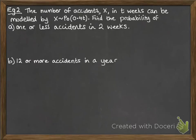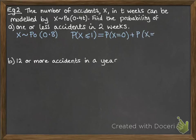Okay, next example. The number of accidents x in t weeks can be modelled by a Poisson distribution with a mean of 0.4t. Find the probability of one or less accidents in two weeks. So x is going to follow a Poisson distribution of 0.8 since t equals 2. So we want the probability that x is less than or equal to 1. That's the probability that x equals 1 or equals 0. So add those two together.